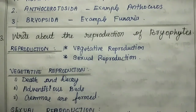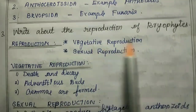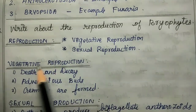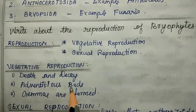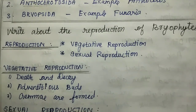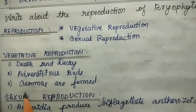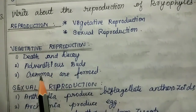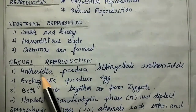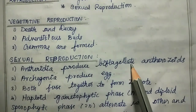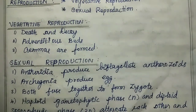Third question: write about the reproduction of bryophytes. Reproduction occurs by vegetative reproduction and sexual reproduction. Vegetative reproduction is by death and decay, adventitious buds, and gemmae or gemmae cups, which are spore-like structures.